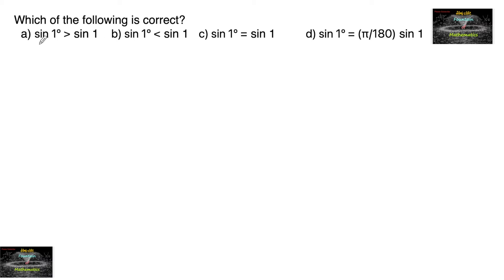Which of the following is correct? sin 1 degree and sin 1 radian. Is sin 1 degree less than sin 1 radian, or are sin 1 degree and sin 1 radian equal, or is sin 1 degree equal to π/180 times sin 1? Let us check out by taking the graph. Let's consider the sine graph.